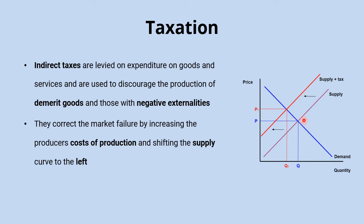Our initial equilibrium point, if left to the market, is here, and then the producer's costs of production increase and the supply curve shifts further to the left, taking us to a new equilibrium. One of the most common errors when trying to show the impact of a tax on a diagram is that people think a tax makes fewer people buy the product, so it's going to shift the demand curve to the left — that is not the case.